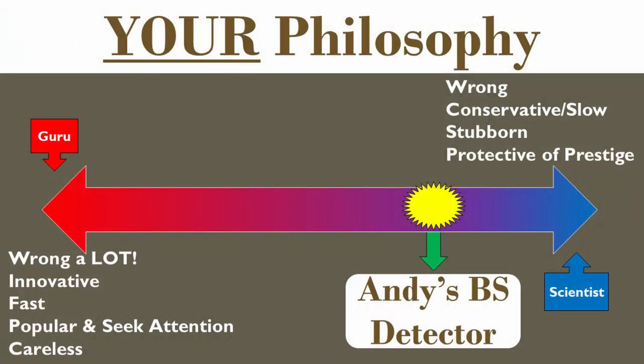Step number one: you have to look at the spectrum I've created and determine where you fall on it personally. I can't tell you which end is better — generally people in the purple are wrong less often, but you may identify more with the red or blue end of the spectrum. There are strengths and weaknesses to both sides. Me personally, I'm about right here — a little more conservative but not all the way to the end.